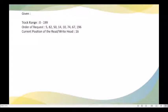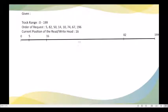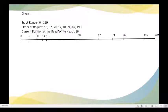To compute the total seek time using SSTF, we first need a representation of our given data. We have a track range from 0 to 199. The current position of the read/write head is at track number 16. The requesting track numbers are: track 5, track 82, track 50, track 14, track 10, track 74, track 67, and track 196.